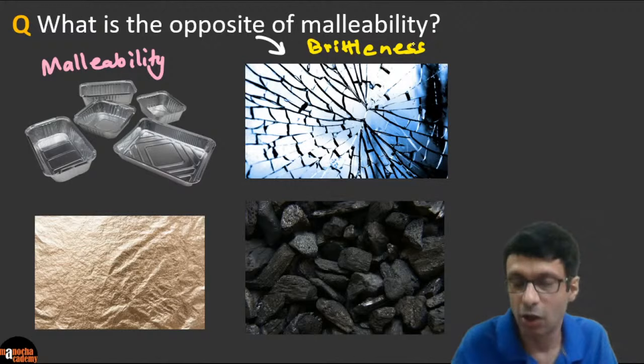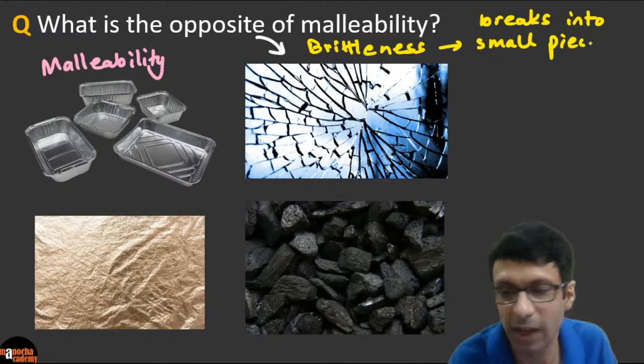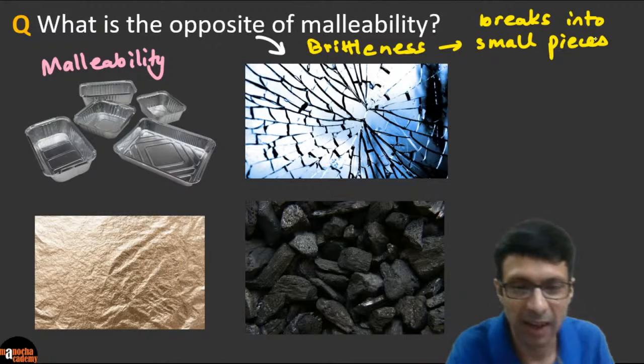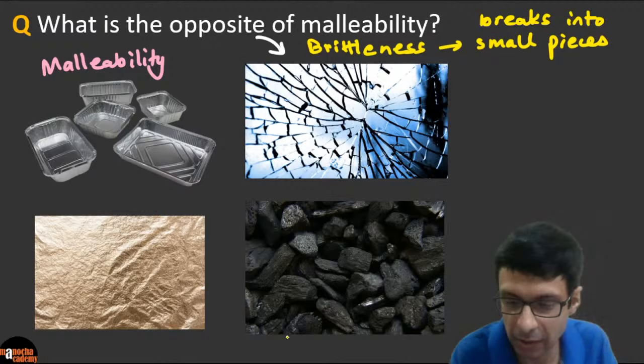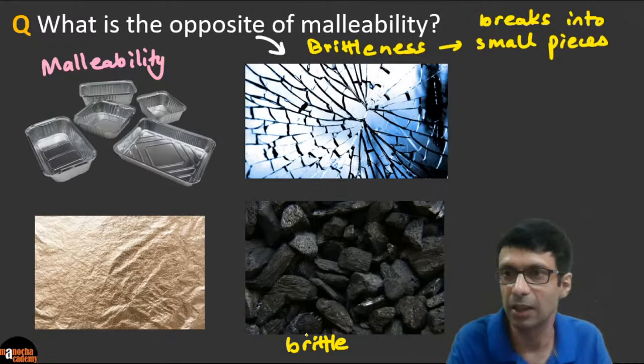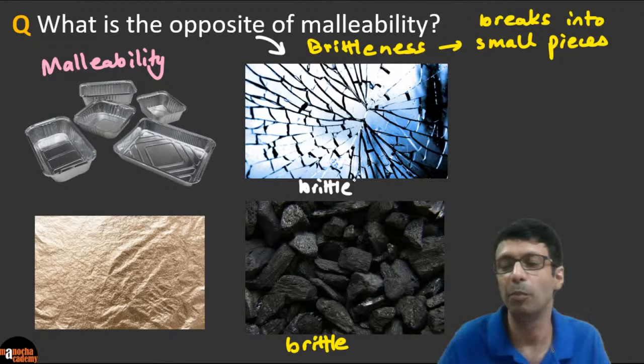Brittleness means the substance breaks into small pieces on hammering. For example, coal — which is carbon — is brittle. Glass is also a great example of brittleness: the moment you hit it with a hammer, it shatters into small pieces.